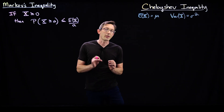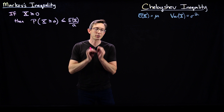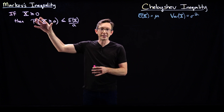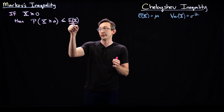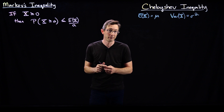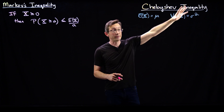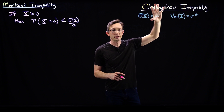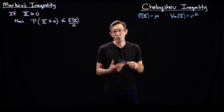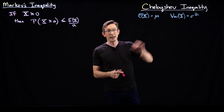Welcome back. Last time we derived Markov's inequality, which is a really intuitive, simple expression for how much of a probability density can be far to the right of its expectation value if the random variable is non-negative. Today we're going to derive and state Chebyshev's inequality, which we're going to use specifically to prove the law of large numbers — one of the most important central results in probability and statistics — in the next lecture.